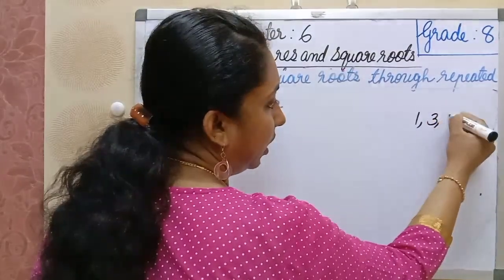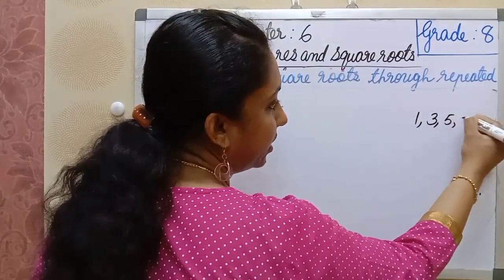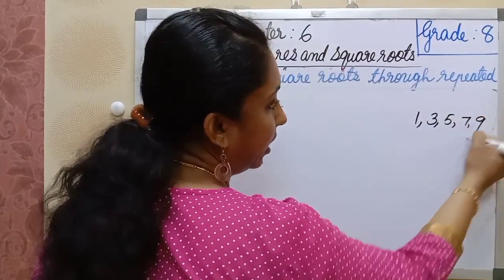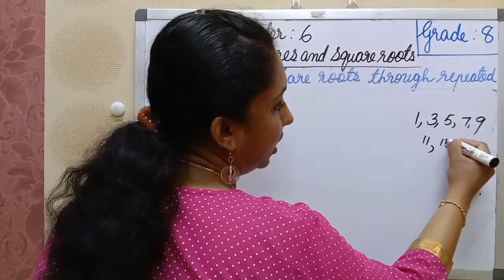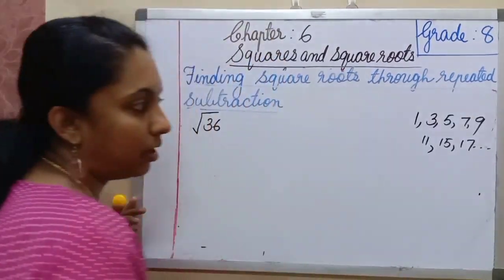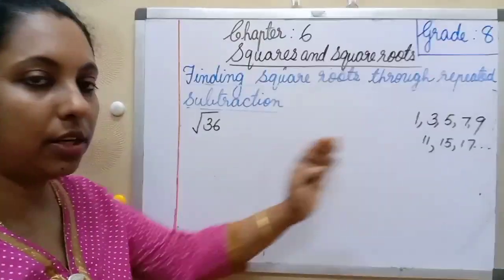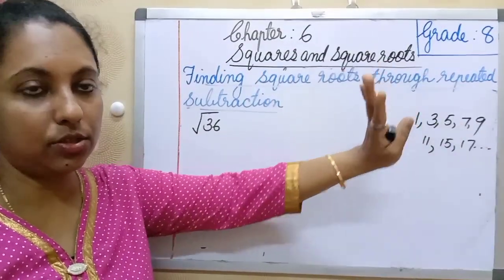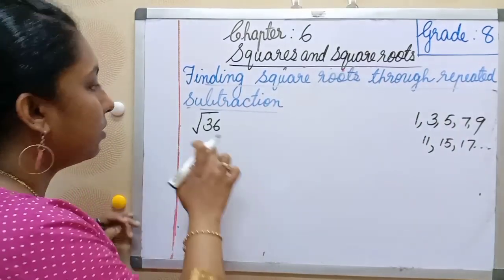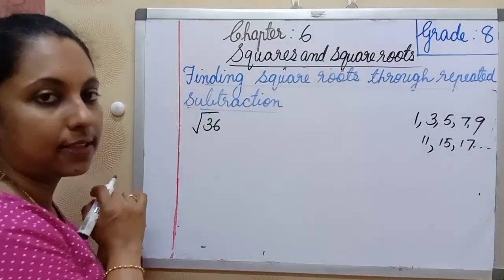The consecutive odd numbers are: 1, 3, 5, 7, 9, 11, 15, 17, and so on — they continue infinitely. We will use these to find square root of 36.